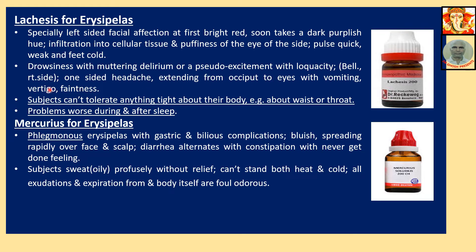Belladonna — right side. One-sided headache extending from occiput to eyes with vomiting, vertigo, and faintness. Subjects cannot tolerate anything tight about their body, for example about the waist or throat. Problems worse during and after sleep.